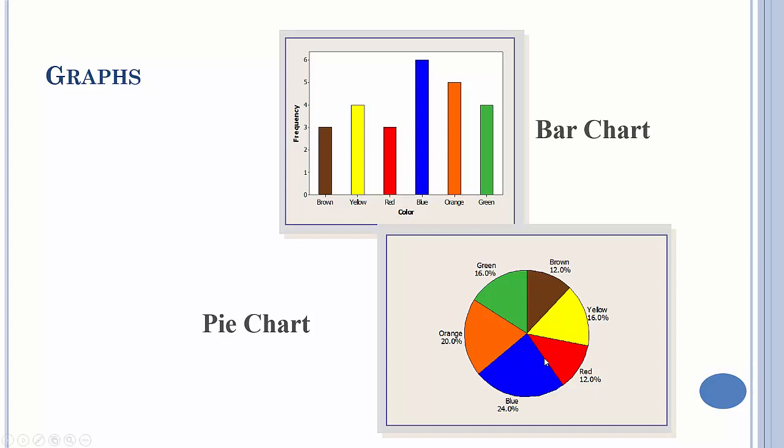Now the pie chart also roughly gives us frequency, but it really gives us relative frequency because each pie slice is supposed to represent the percent of the whole. This is almost a full quarter, so that's 24%, and so on and so forth.